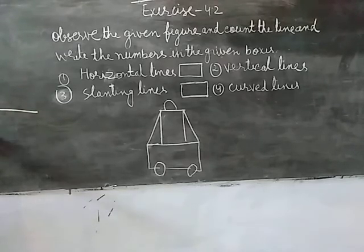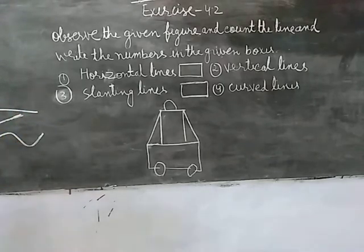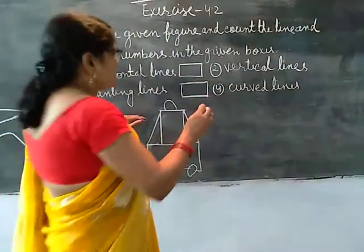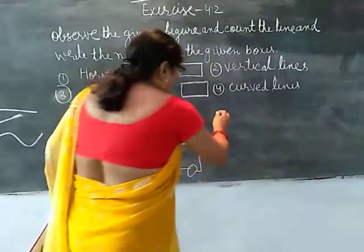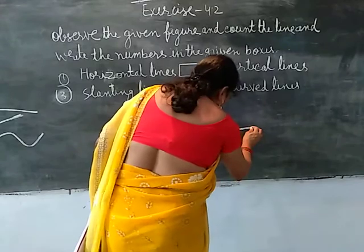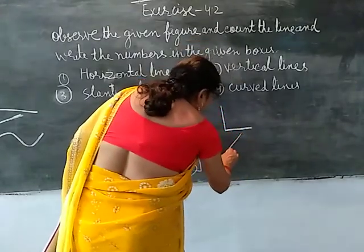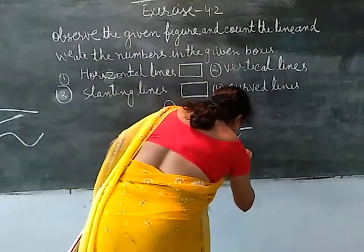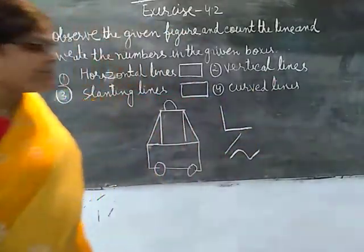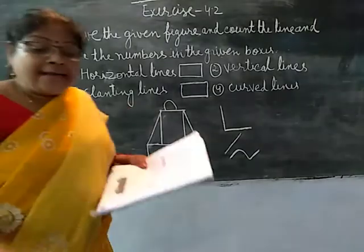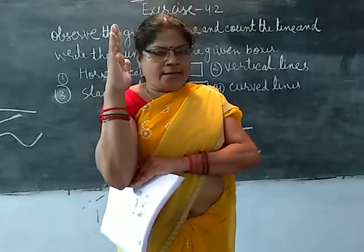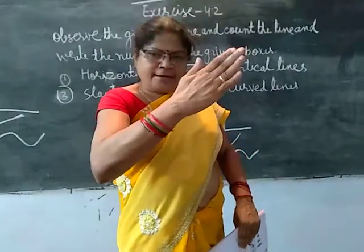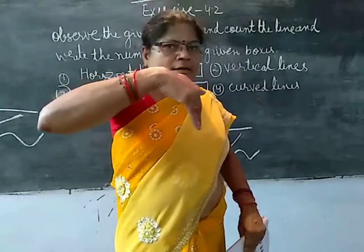This line is slanting. And this line is curved. This line is vertical. The vertical line is horizontal. It is vertical. And your horizontal line is vertical. Sometimes I say this line is vertical. Vertical line kya hai? Horizontal, slanting, curve — do you understand?